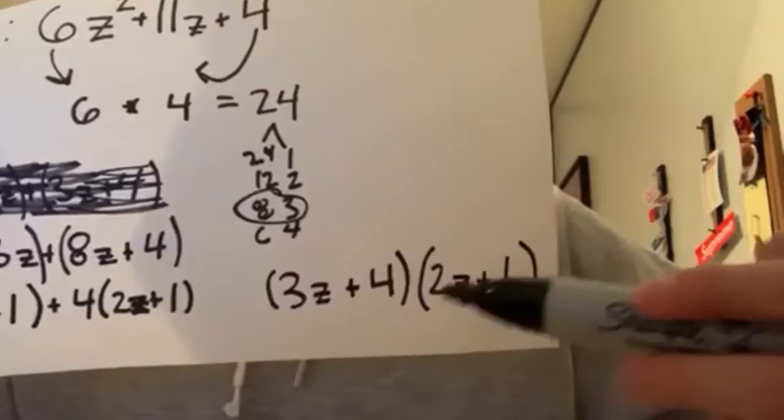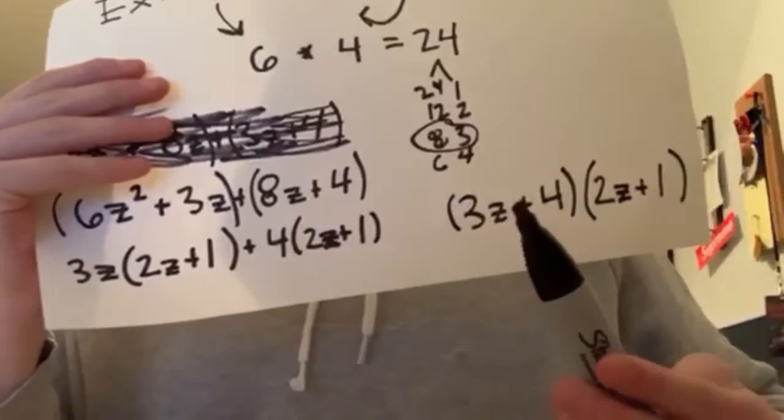We got that by taking the 3z and the 4, putting them together, and then taking just the 2z plus 1 — and that's how you solve a difficult trinomial.